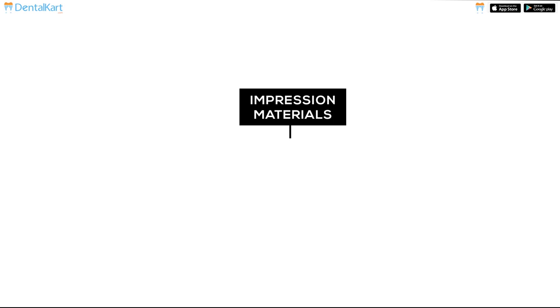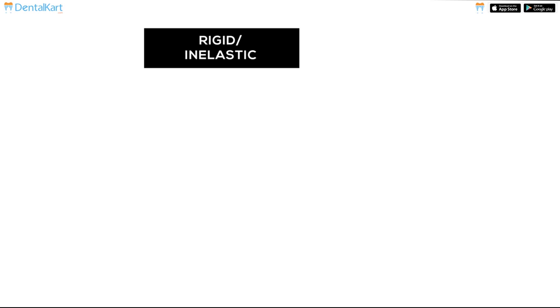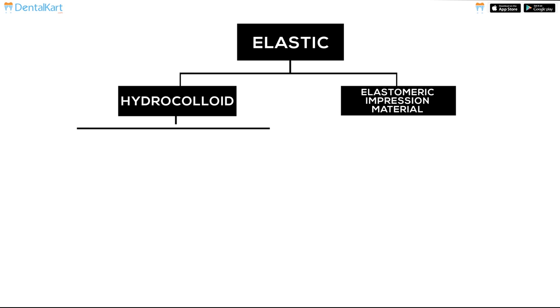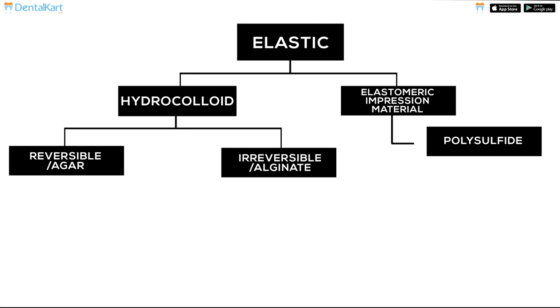Impression Materials are classified based on rigidity and elasticity. Rigid Impression Materials include Impression Compound, Impression Plaster, Zinc Oxide Eugenol Paste, and Impression Waxes. Elastic Impression Materials are divided into Hydrocolloids — which include Agar and Alginate — and Elastomeric Impression Materials, which include Polysulfide, Polyether, Condensation Silicone, and Addition Silicone.